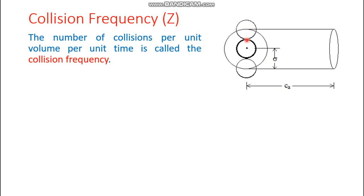Consider a molecule moving from right to left. Its collision diameter extends upward and downward from its center. If CA is the average speed of that molecule, then in one second it travels a certain distance and simultaneously sweeps out a cylinder — the collision diameter is considered as the radius of that cylinder.